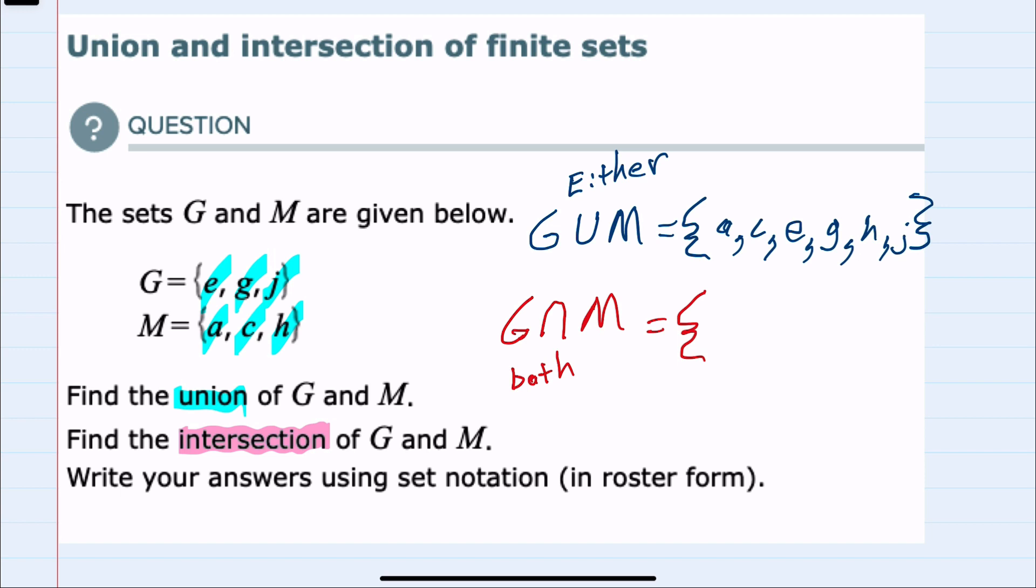However in this example there aren't any elements that are in both G and M. For example, they don't both have an h, only one has an h. So since there is no overlap, we would represent that with the empty set.